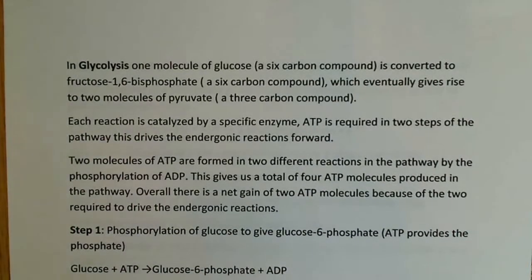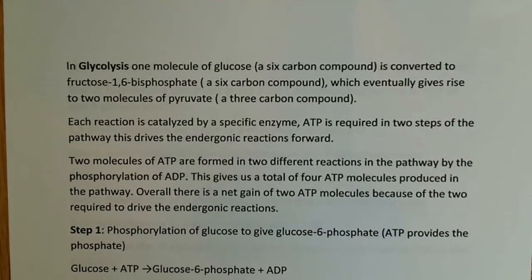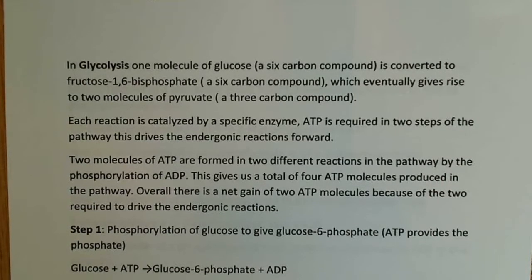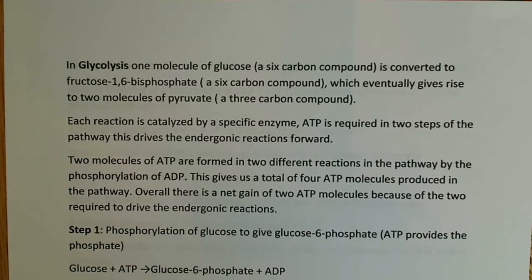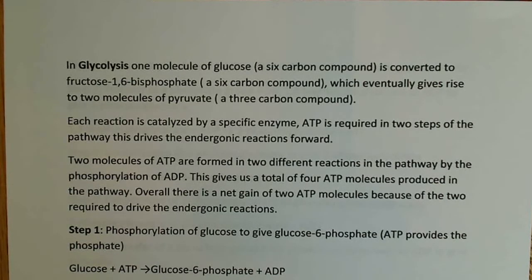In glycolysis, one molecule of glucose — the important thing to remember, a six-carbon hexose sugar — is converted to fructose-1,6-bisphosphate. That's the committed molecule of glycolysis, the first unique intermediate in the pathway, and that's also a six-carbon compound. But it eventually gives rise to two molecules of pyruvate, which is a three-carbon compound, so it gives you two three-carbon compounds instead of one six-carbon compound.